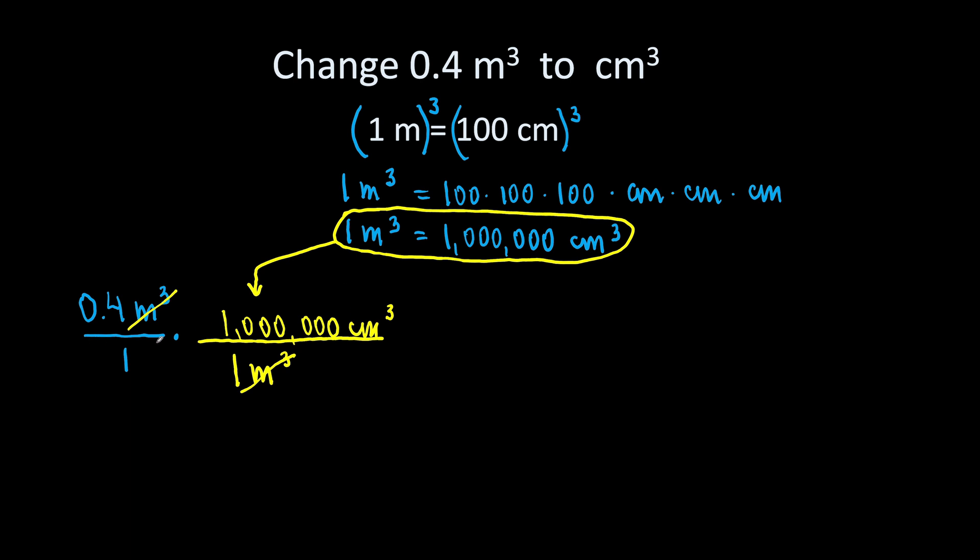So, all we have to do is to write what we have as a fraction and multiply by the conversion factor. We write the conversion factor in such a way so our original units cancel out and we are left with the units we want, cubic centimeters. Now, let's do the math.